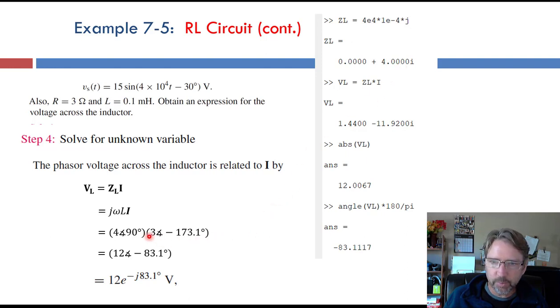And we multiply that by the phasor for the current. And we can multiply the amplitudes together. 4 times 3 gives us 12. And we can add these angles together. 90 minus 173 gives us the phase angle of negative 83. And that's our phasor for the voltage across the inductor.